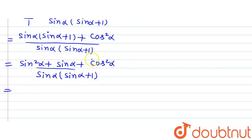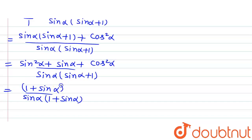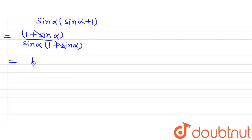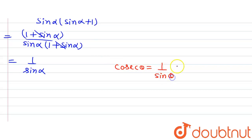Since sin²α + cos²α = 1, we have (1 + sinα) in the numerator and (sinα)(1 + sinα) in the denominator. The (1 + sinα) terms cancel out, leaving us with 1 divided by sinα.